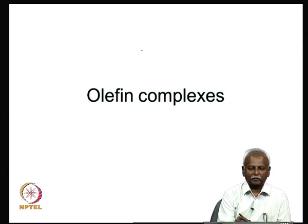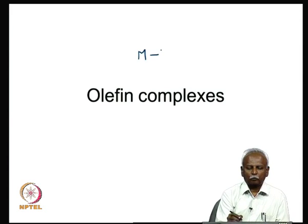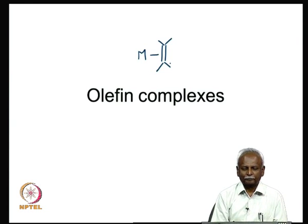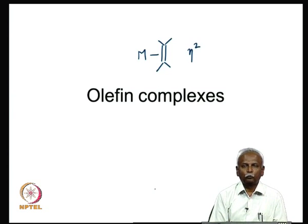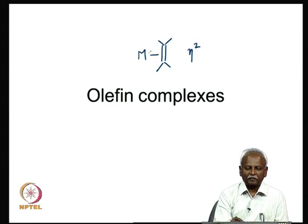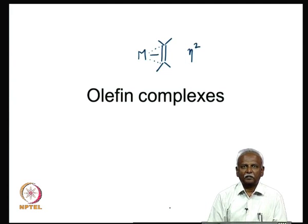Today we will discuss metal olefin complexes. For the first time in this series, we are going to look at compounds where the metal is bonded to 2 carbon atoms simultaneously. In organometallic terms, one often indicates the formation of an olefin complex by drawing a line between the 2 carbons. In the nomenclature, one indicates this as an eta-2 complex, meaning both carbon atoms are bonded — not necessarily equidistant, but almost in a similar fashion — so that both carbons are interacting with the metal simultaneously.